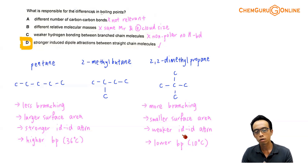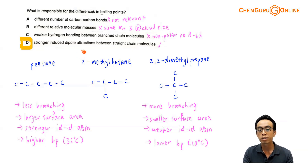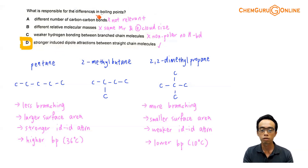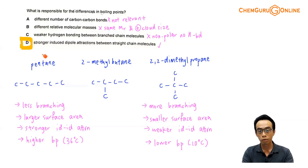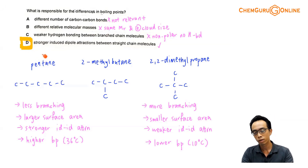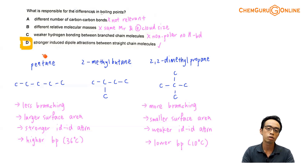Considering all four options, the best answer that explains the differences in boiling points for this question is option D. That was the discussion involving 2020 A-levels H2 chemistry, paper 1, question 4.